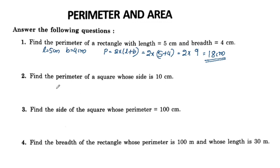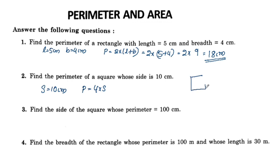Next, find the perimeter of a square whose side is 10cm. The side is equal to 10cm. The perimeter of a square is equal to 4s, that is 4 times the side.